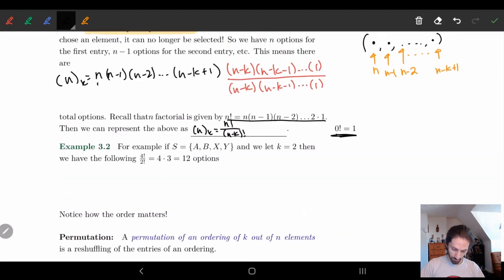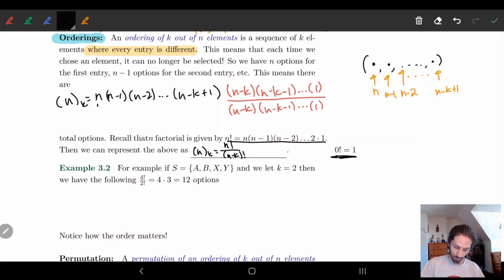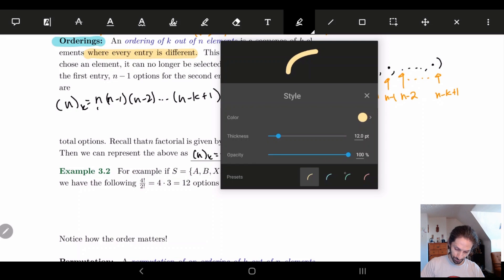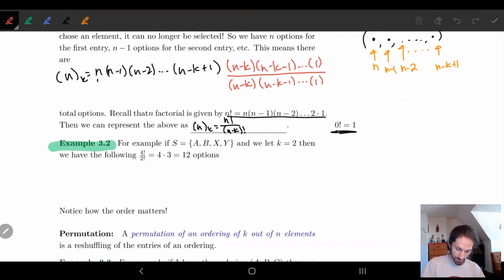So let's look at an example, Example 3.2. So here we're taking our set to be a, b, x, y. So we have n equal to four. And we're going to look at k equal to two. And we're going to look at all the different possible options.